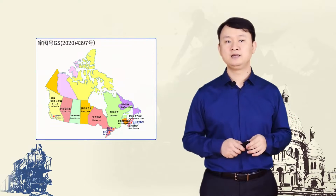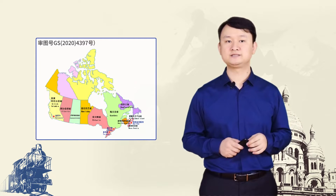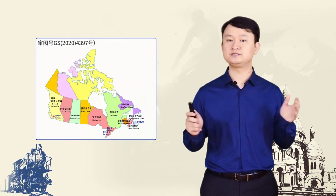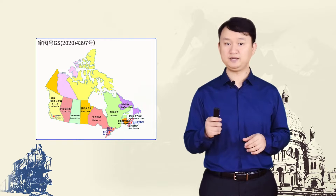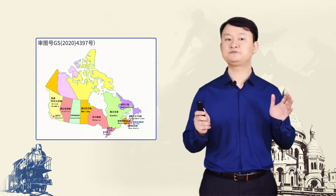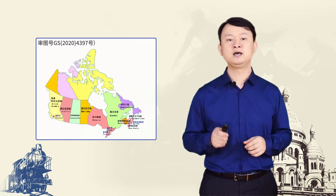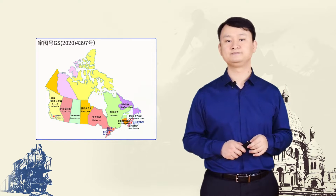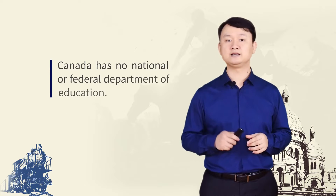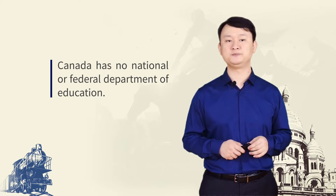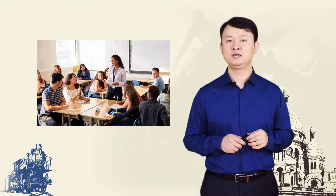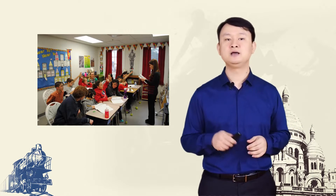In Canada, ten provinces and three territories are responsible for elementary, secondary and university education, which means there are significant differences between the educational systems of different provinces and territories. As a result, Canada has no national or federal department of education. For each provincial system, while similar to others, bears some characteristics with respect to particular history and cultures. However, the standards across the country are uniformly high.